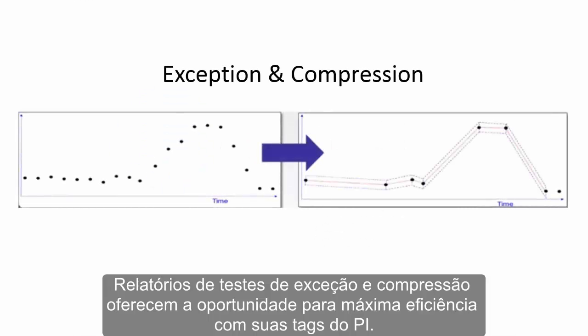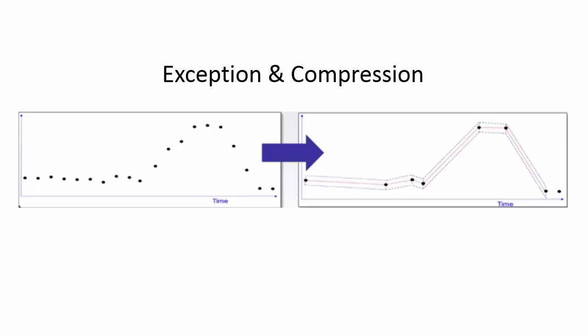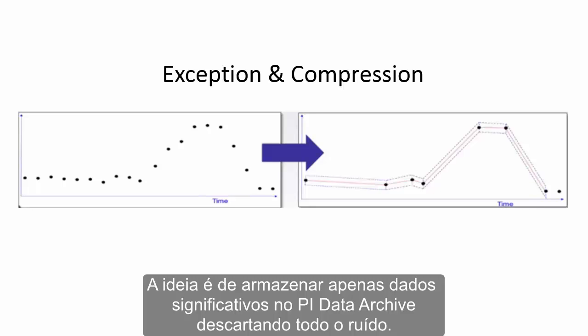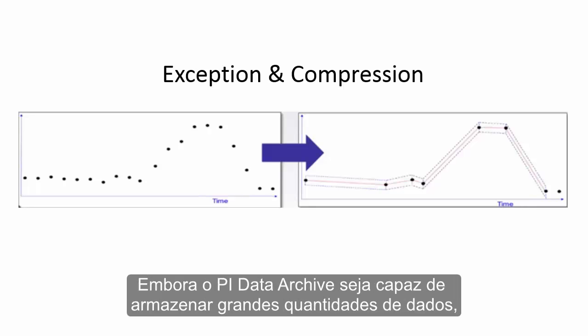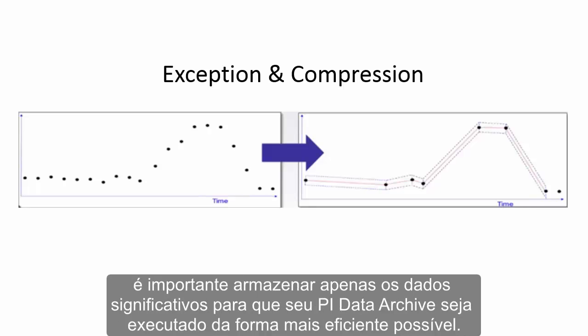Exception reporting and compression testing offers you the opportunity for maximum efficiency with your pipelines. The idea is to only store meaningful data in the PI Data Archive while discarding all the noise. Although PI Data Archive is capable of storing enormous amounts of data, it is important to store only this meaningful data in order to make your PI Data Archive run more effectively and efficiently.